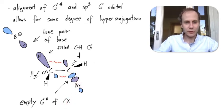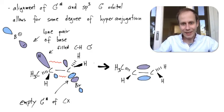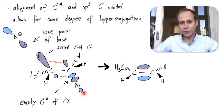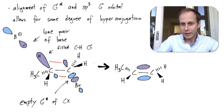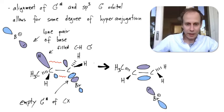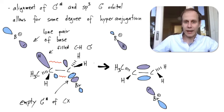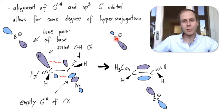The alignment of the sp3 sigma orbital and the sigma star of the halogeno alkane causes this interaction. When the base attacks, it attacks the sp3 sigma bond, causing electron density to move over to the empty sigma star. As a result, a pi bond — a double bond — is formed, and the bromide splits off with a lone pair. The base grabs the hydrogen or proton, forming a water molecule.